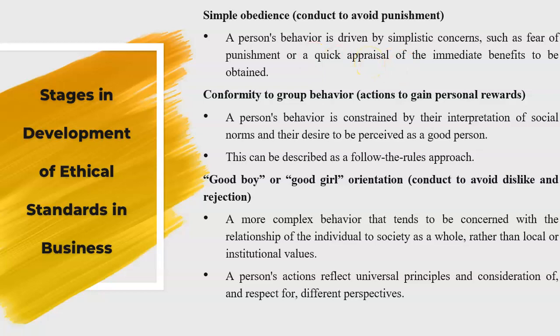The second stage is conformity to group behavior — actions to get personal rewards. A person's behavior is constrained by their interpretation of social norms and their desire to be perceived as a good person. You need to have your own definition of what is right and wrong, and you know what kind of person you are, whether good or bad.